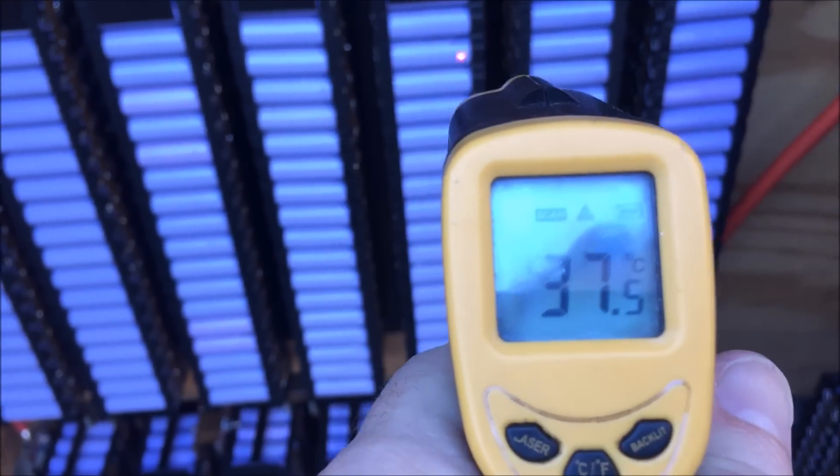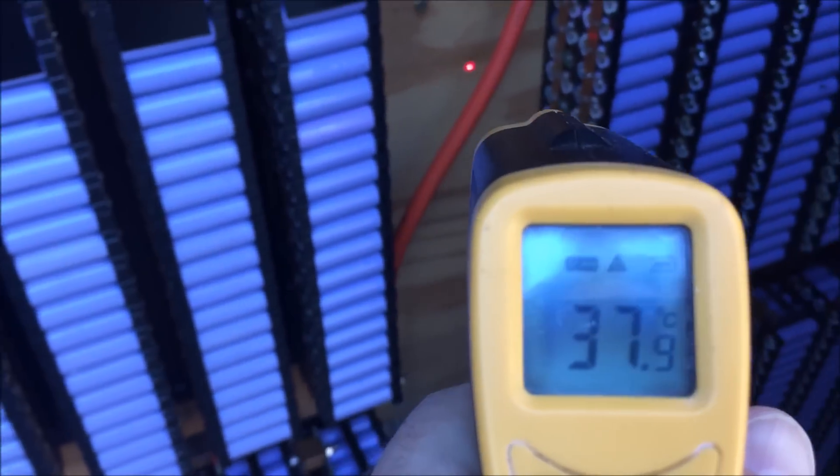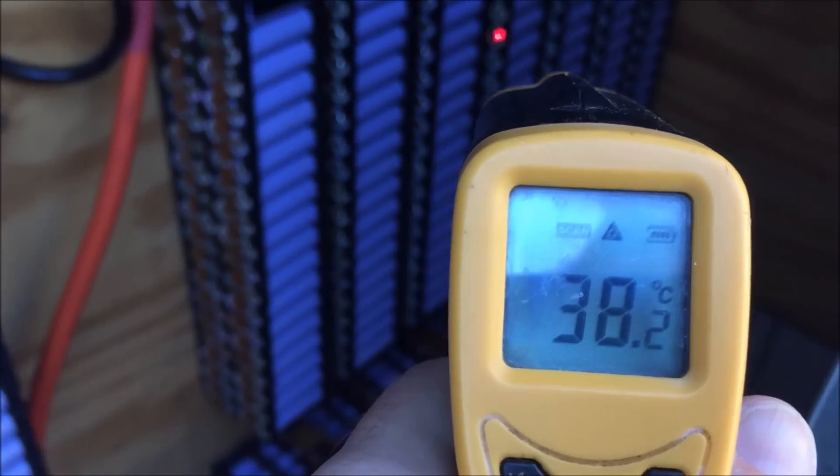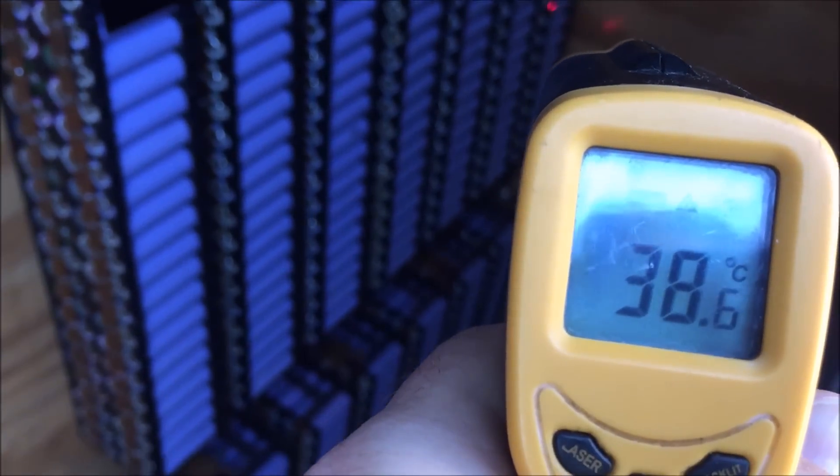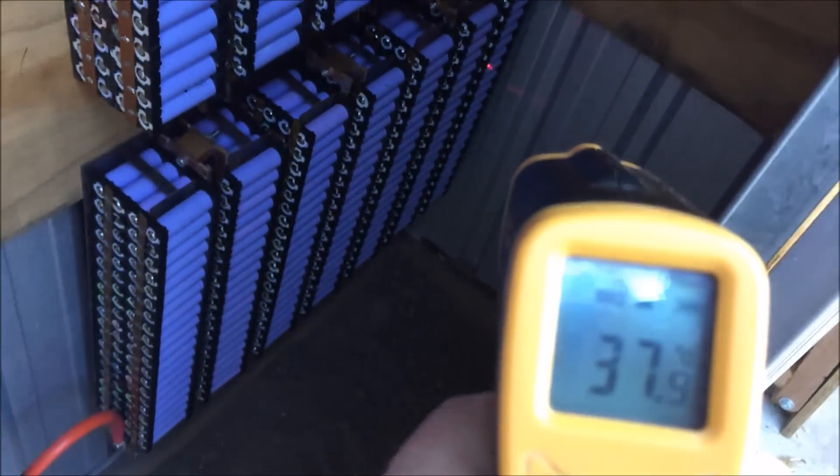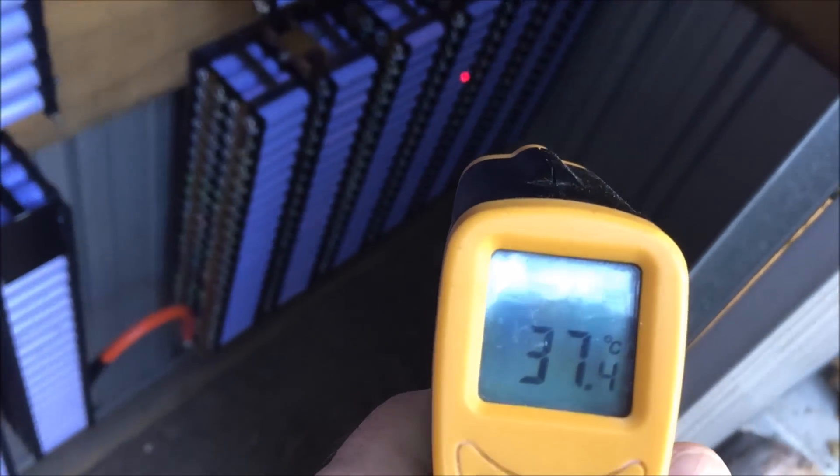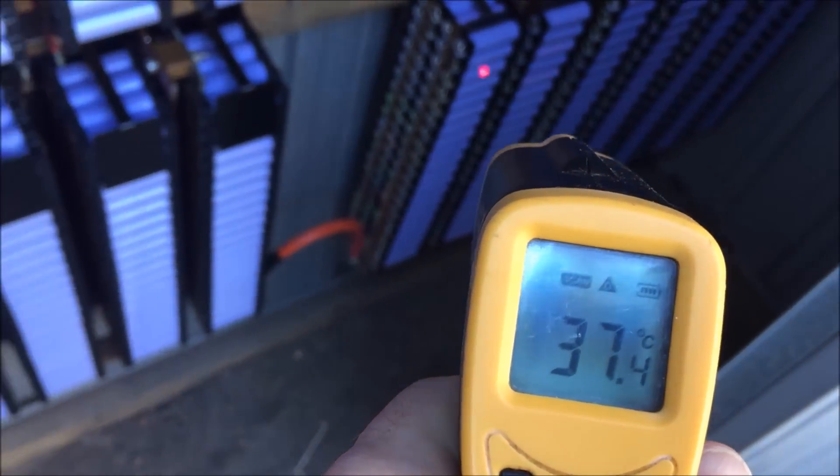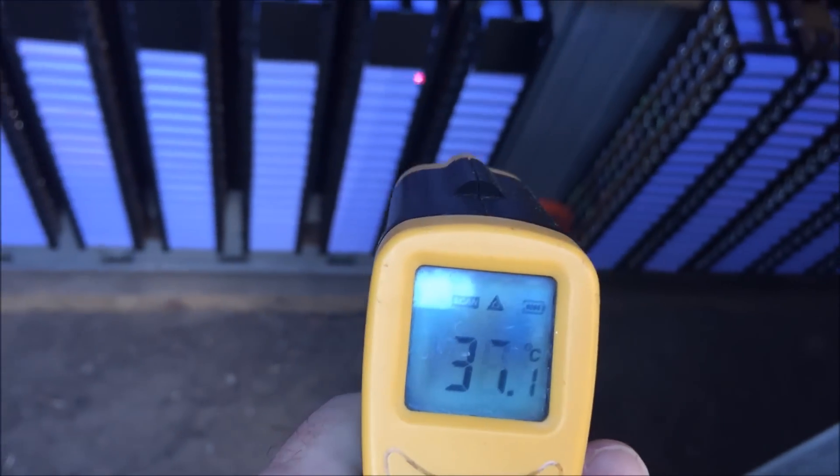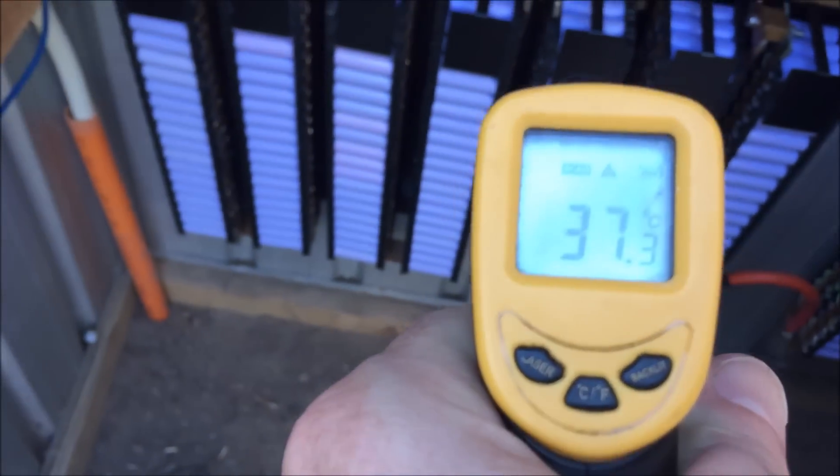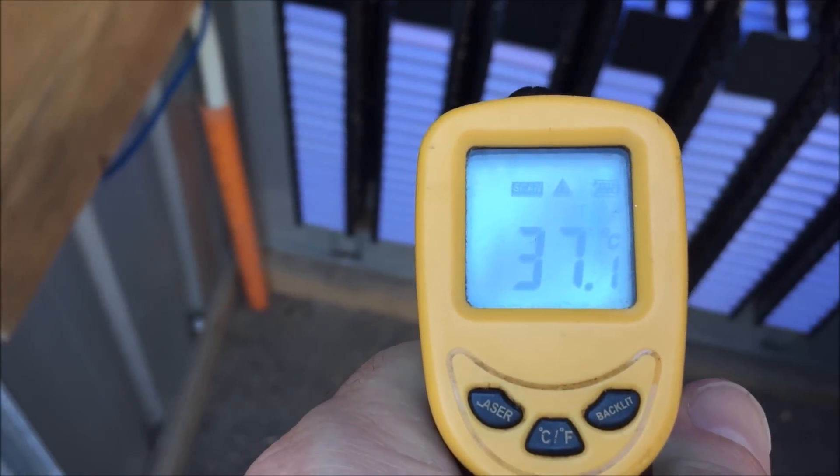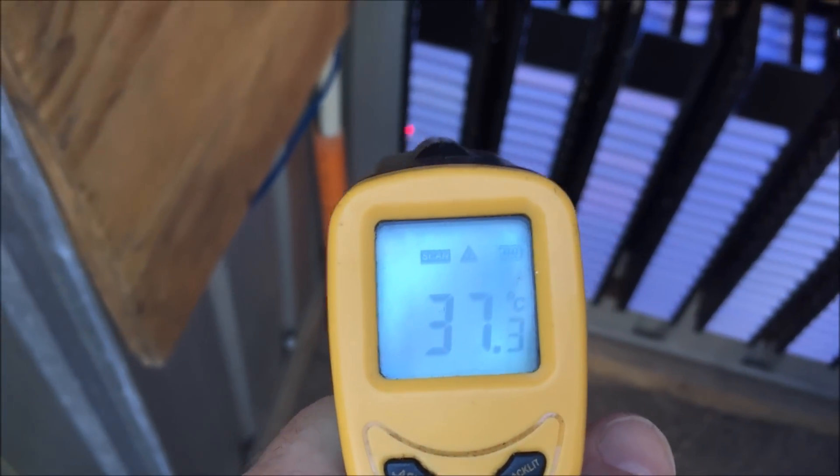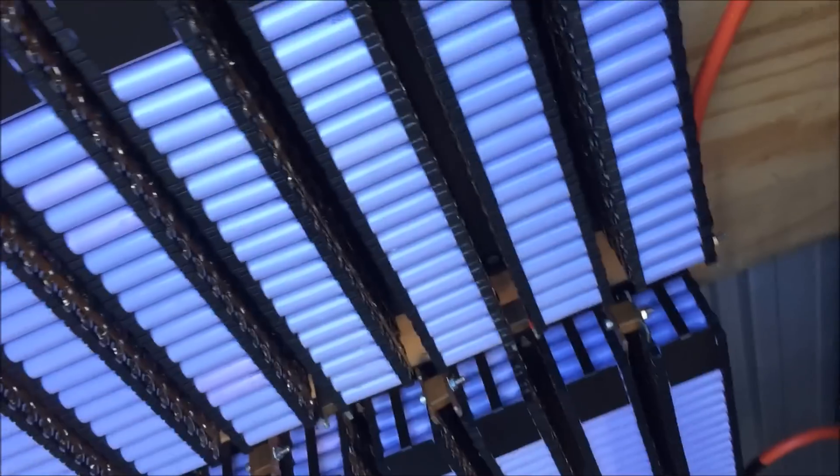And as you expect as you get lower in the shed it gets cooler. 37. So basically all of those cells are the ambient air temperature. And although that's hot it's not horribly hot.